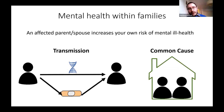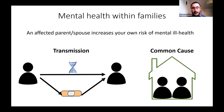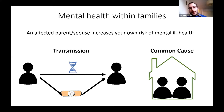Families play a very important role in an individual's mental health risk, and most previous work has thought about this in terms of transmission — either directly through things like genetics, or indirectly through things like parental behaviours. Very few studies have looked at the impact of shared family circumstances, such as poverty that affects everybody in the household, partly because it's hard to distinguish from transmission in most cases.